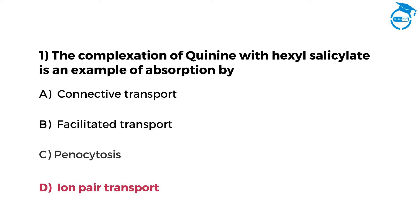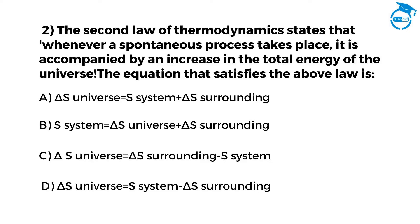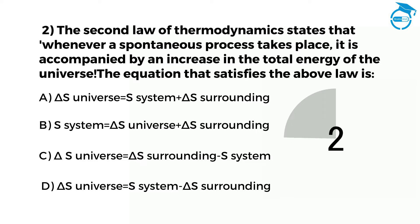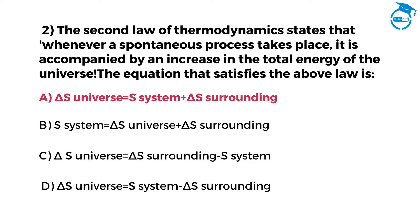Now, let us quickly move to question number 2. The second law of thermodynamics states that whenever a spontaneous process takes place, it is accompanied by an increase in the total energy of the universe. The equation that satisfies the above law is: option A delta S universe equals delta S system plus delta S surrounding, option B S system equals delta S universe plus delta S surrounding, option C delta S universe equals delta S system, option D delta S universe equals S system minus delta S surrounding. The right option is A, which is delta S universe equals delta S system plus delta S surrounding.